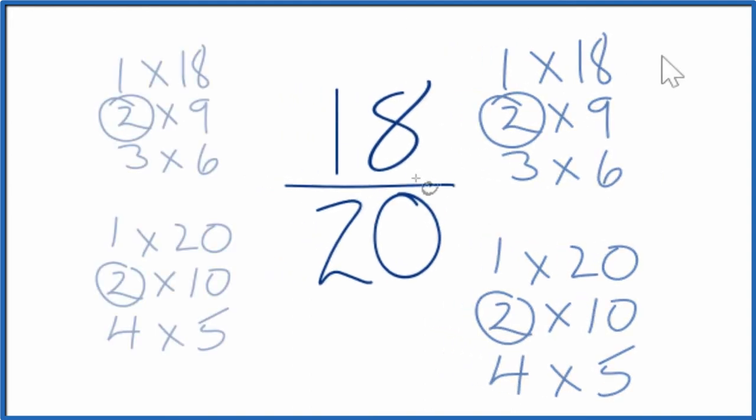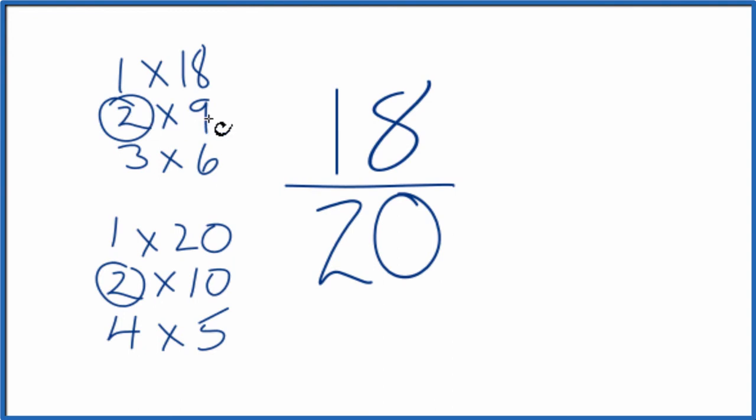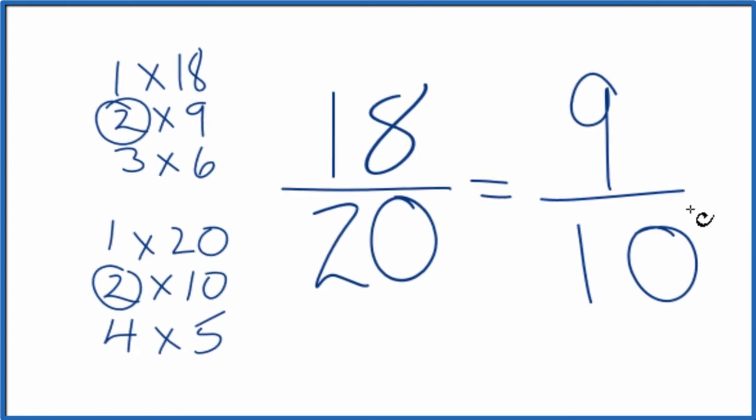Let's move this over here. So 18 divided by 2 equals 9, and then 20 divided by 2 gives us 10. And we've simplified the fraction 18/20 down to 9/10, and we can't simplify this any further.